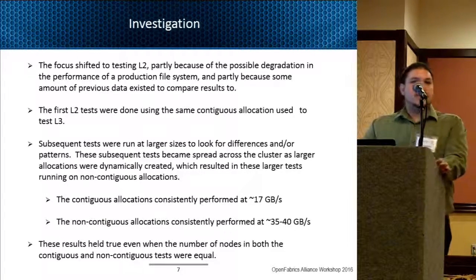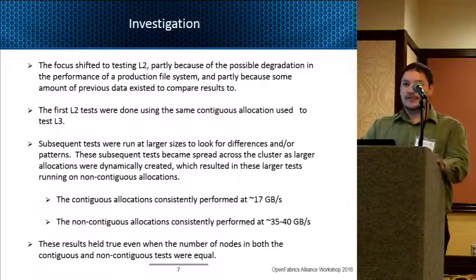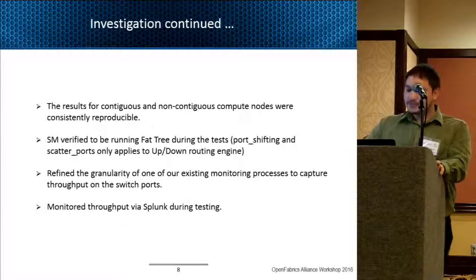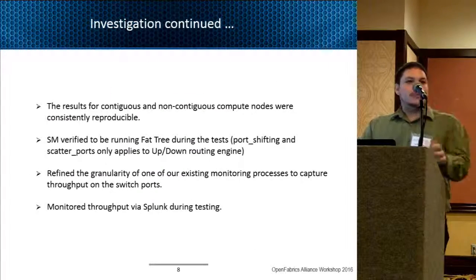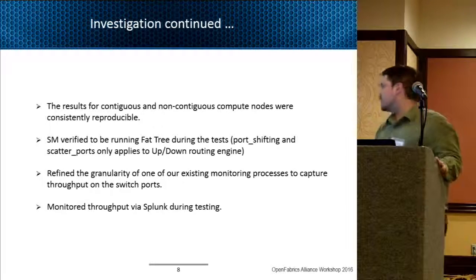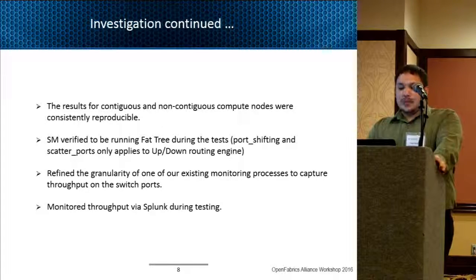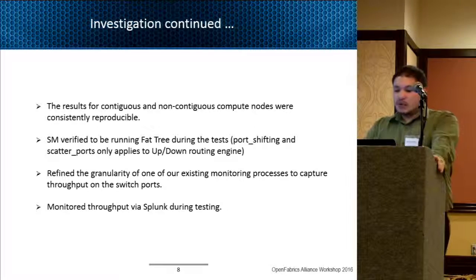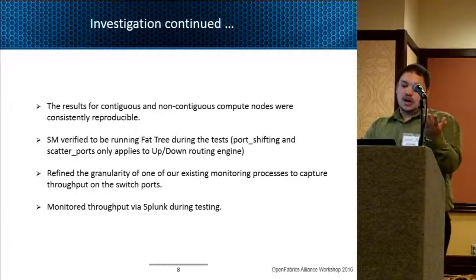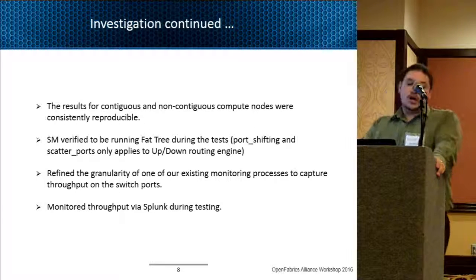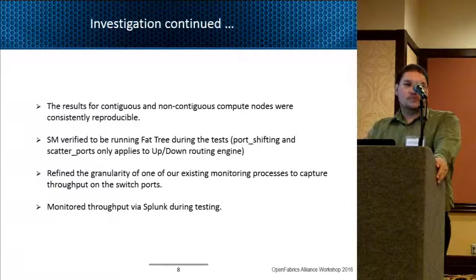This held even with different sizes of node allocations — it didn't matter how many nodes we had; it just mattered whether they were contiguous or non-contiguous on the fabric. Every single time we ran these tests they were reproducible, which we thought was very interesting and indicated we needed to look more at our routing in general on the Wolf fabric. We verified that the routing algorithm was running fat tree on the Wolf chassis, and port shifting and scatter ports weren't applicable because they're only used for up-down routing, not fat tree.